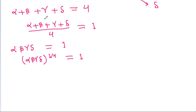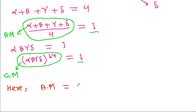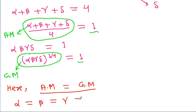(alpha + beta + gamma + delta)/4 is the arithmetic mean, and (alpha·beta·gamma·delta)^(1/4) is the geometric mean. Both are equal to 1. Since AM = GM, that means alpha = beta = gamma = delta = 1.